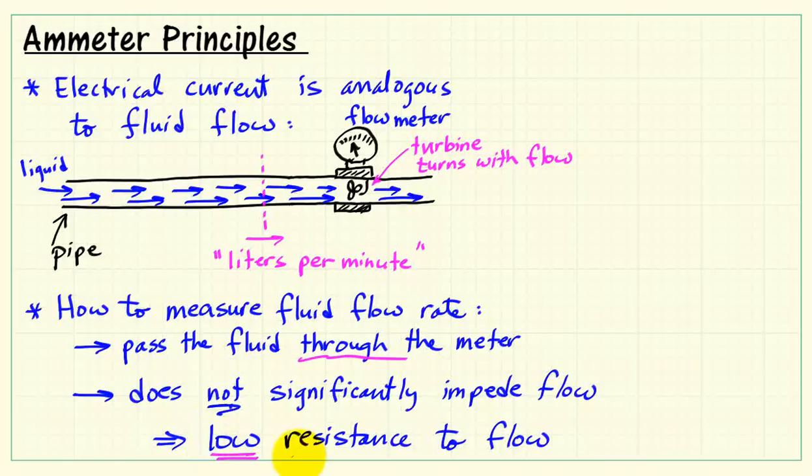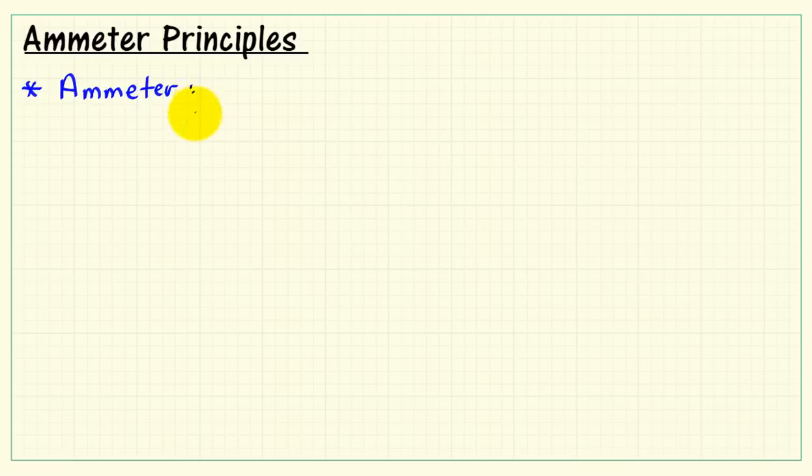Now in a similar way, the electrical measurement also has to direct the current through the meter, and the meter would have low resistance to electrical flow.